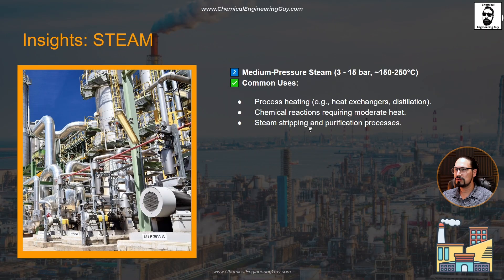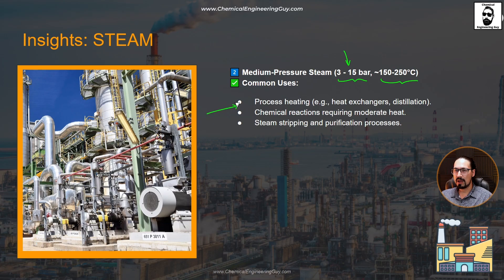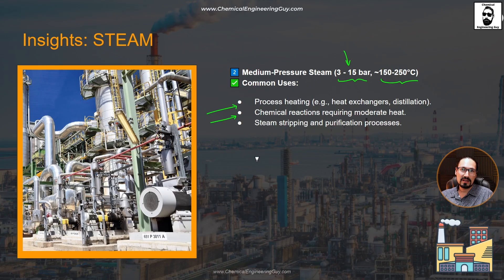Next, medium pressure steam — not quite common, but you may still encounter it. Pressures are intermediate and temperatures go all the way to 250 degrees. This is used for process heating — the actual industrial process, not facility heating — including heat exchangers, distillation, chemical reactions requiring elevated temperature, and steam stripping and purification processes.